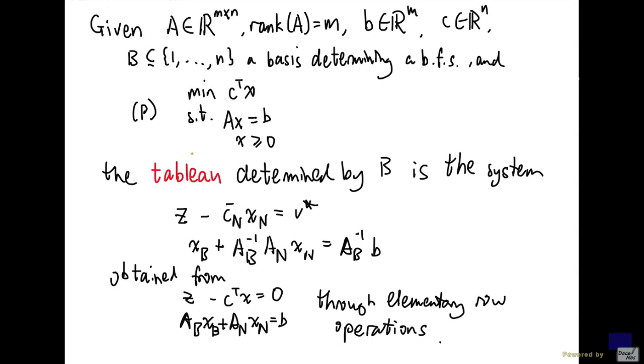Say we are given a linear programming problem in standard form, as denoted by P here with this problem data. Again, A is m by n with full row rank, b is an m vector and c is an n vector.